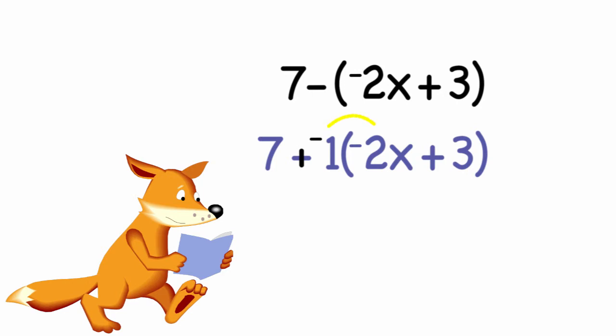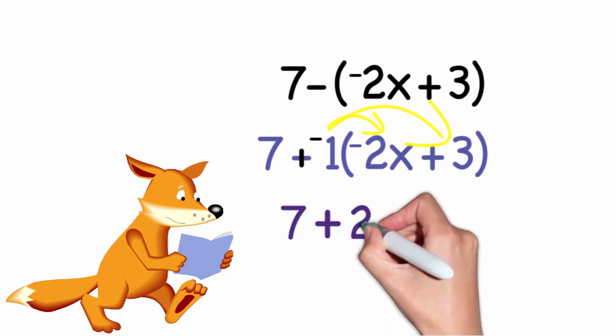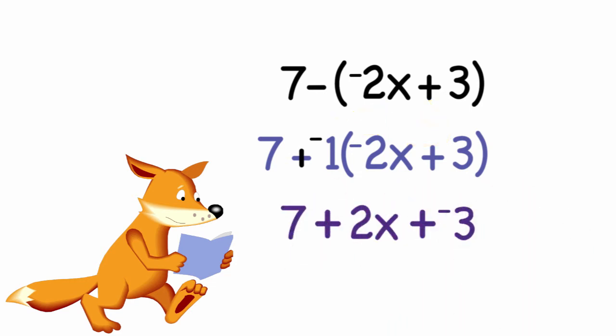And distribute my negative 1 to both the negative 2x and the positive 3. And that would give me 7 plus 2x plus negative 3, just like before. It would then simplify to 4 plus 2x.